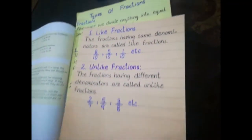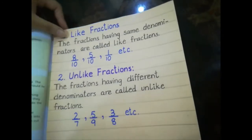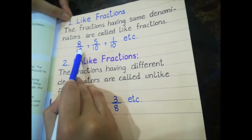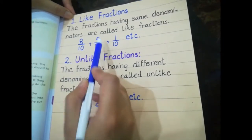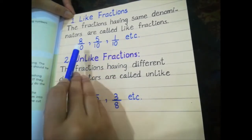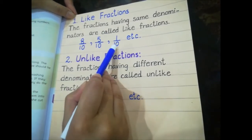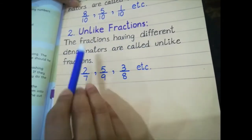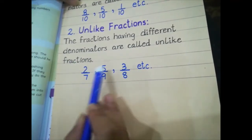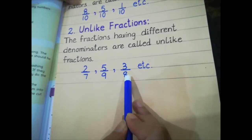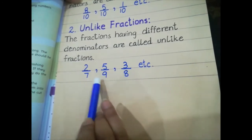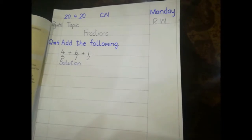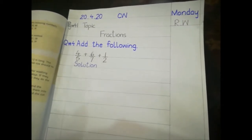There are also two more categories: like fractions and unlike fractions. Like fractions are fractions having the same denominators. For example: 8 by 10, 5 by 10, 1 by 10 — all have the same denominator. Unlike fractions are fractions having different denominators. For example: 2 by 7, 5 by 9, 3 by 8 — all have different denominators. Now we are going to start the addition of fractions.